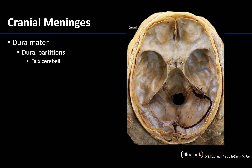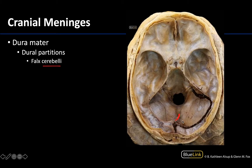Last but not least, we have the falx cerebelli — not the falx cerebri, but the falx cerebelli. So we know it probably has a close relationship with the cerebellum. You can see just a little bit of it right about here, inferior to where the falx cerebri would have stopped. We are looking at a superior view again, but not only has the falx cerebri been removed, but also the tentorium cerebelli — and that is an important distinction, as the tentorium cerebelli must be removed or reflected in order to see any of the falx cerebelli. The falx cerebelli is located between the cerebellar hemispheres when the brain is present, and when the brain is absent you can see it inferior to where the tentorium cerebelli would be located, heading towards but not quite reaching the foramen magnum.